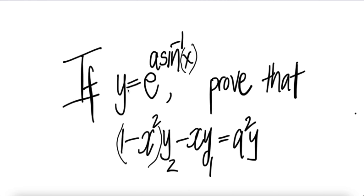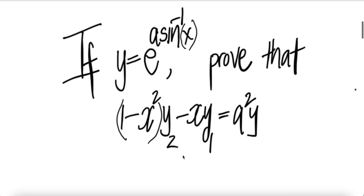If y is equal to e to the power of a arc sine x, prove that 1 minus x squared times y subscript 2 minus x times y subscript 1 is equal to a squared times y. Note that y subscript 1 is dy/dx and y subscript 2 is the second derivative of y with respect to x — another notation to represent dy/dx and d²y/dx².